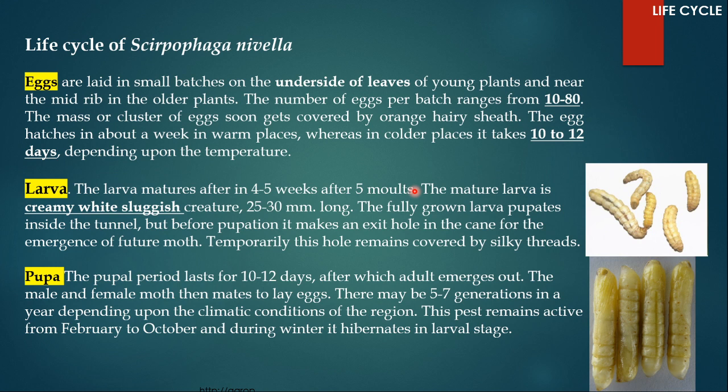The eggs are laid in small batches on the underside of leaves of young plants, and near the midrib in older plants. The number of eggs per batch ranges from 10 to 80, and the mass or cluster of eggs soon gets covered by an orange hairy sheath. The eggs hatch in about a week in warm conditions, whereas in colder conditions it takes 10 to 12 days depending upon temperature.